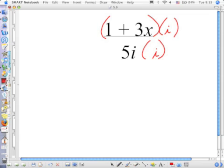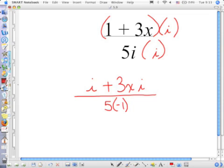All right? Well, in the top we have, what do you call that? Distribution. It's on the back side, but that's still what we've got to do. 1 times i is i. How do you think we would write 3x times i? 3xi. Now, in the denominator, I have 5i squared. But i squared is negative 1.